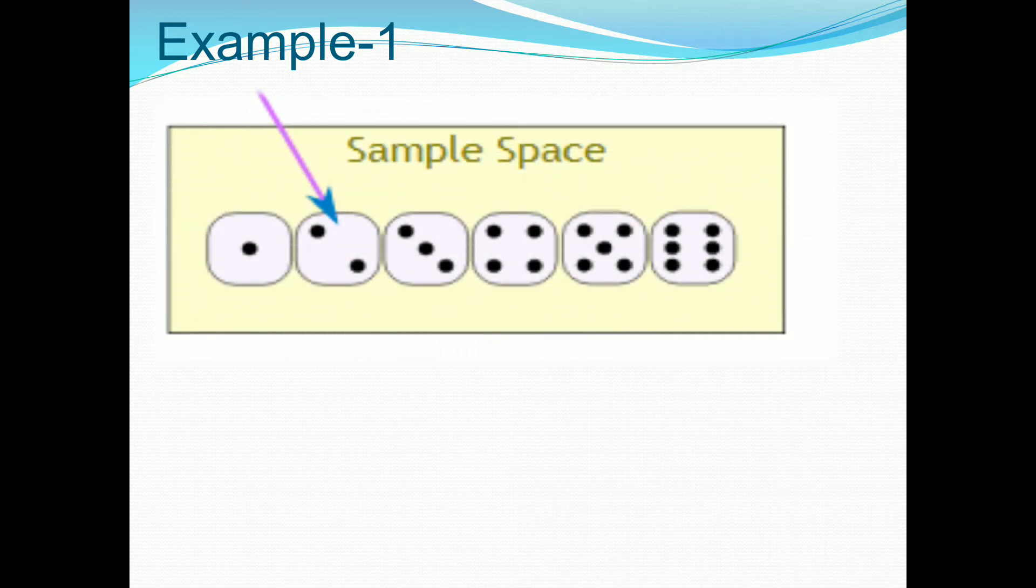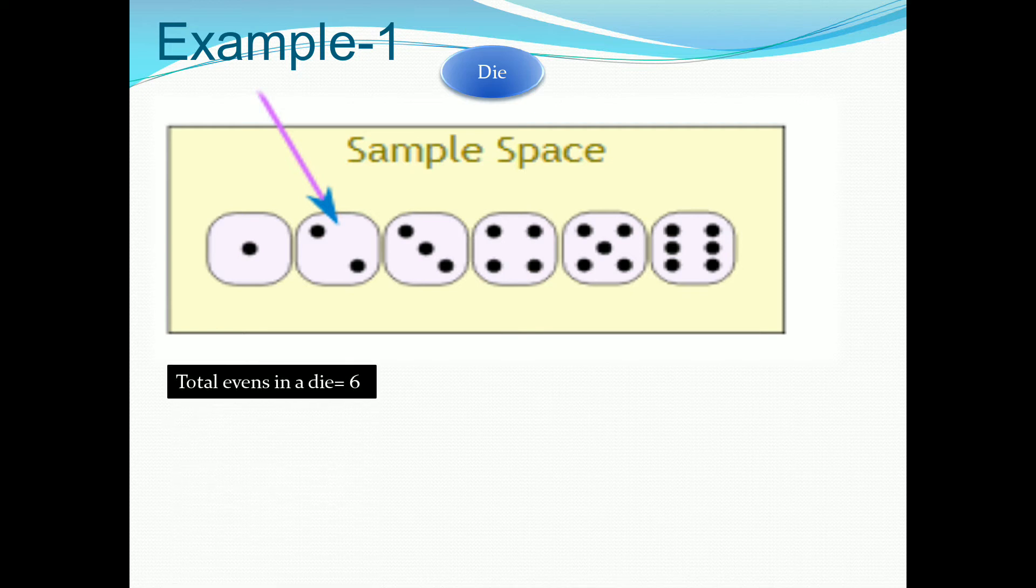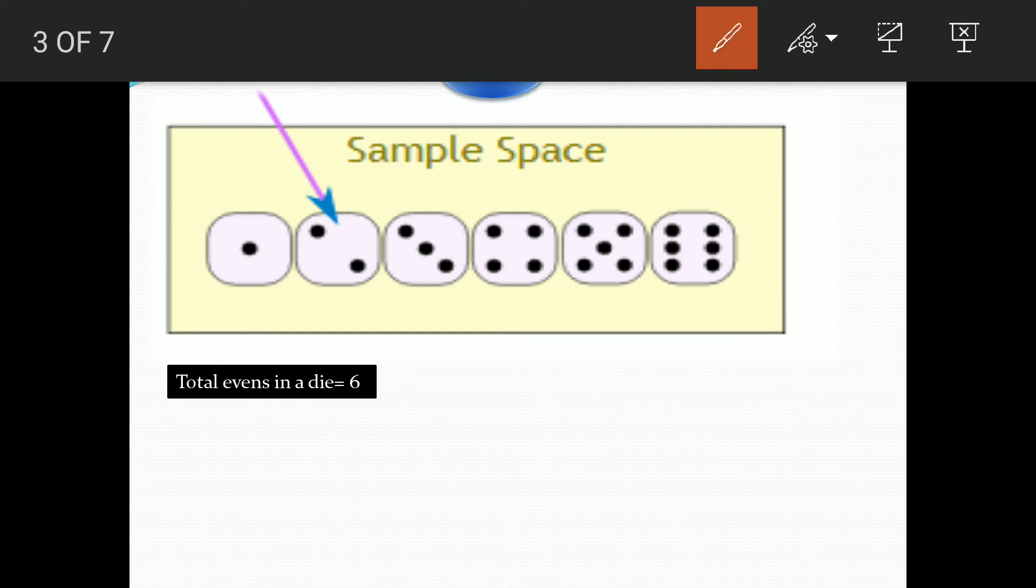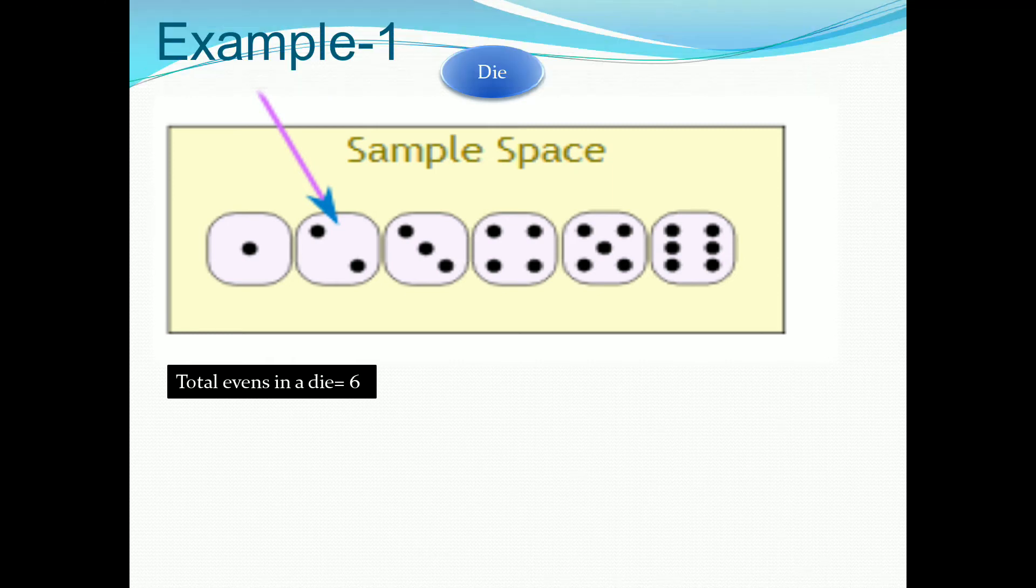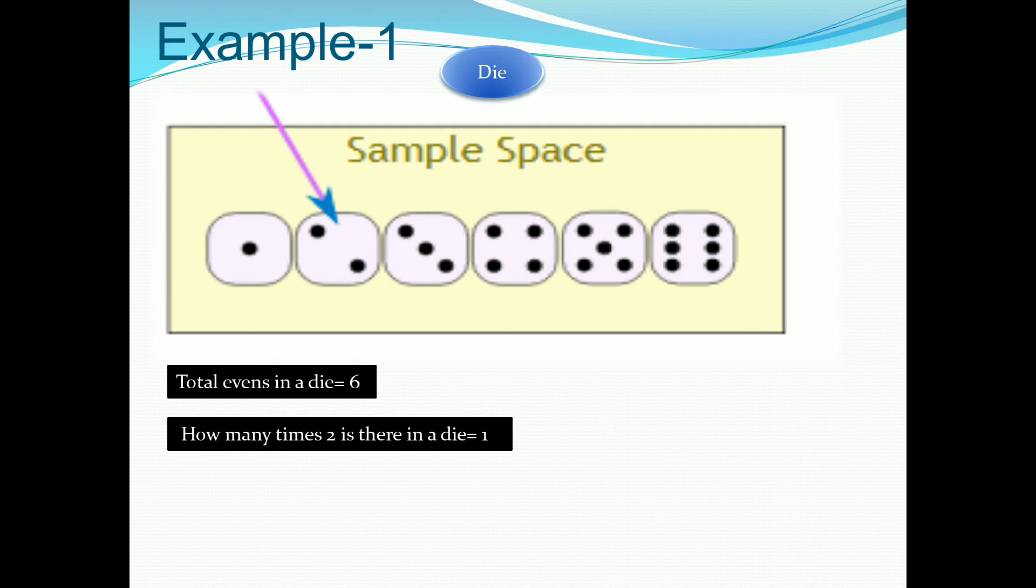Example 1. That is Dice. Total Event 6. See students, here total event is 6. How? It is 1st event, 2nd, 3rd, 4th, 5th and 6th. So total event is 6. Now, how many times 2 is there in a die? That is equal to 1.